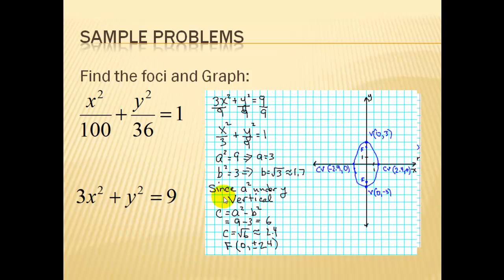Our second problem is not in standard form. It's not equal to 1 over here. So we have to divide both sides of the equation by 9. And on this side, we have to divide all the terms by 9. We can simplify this fraction here and we get 1/3. Here we have 1/9.